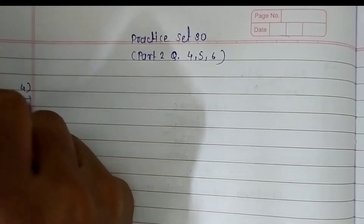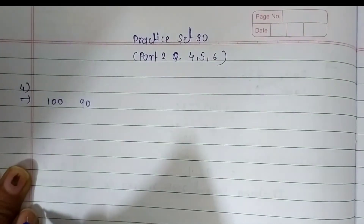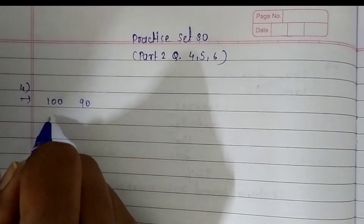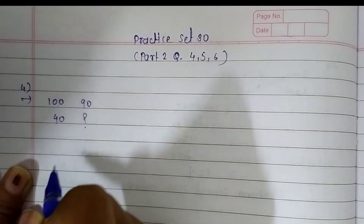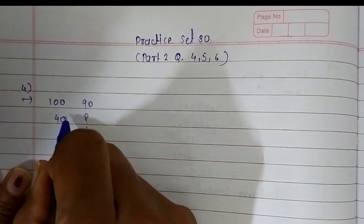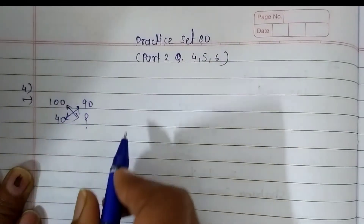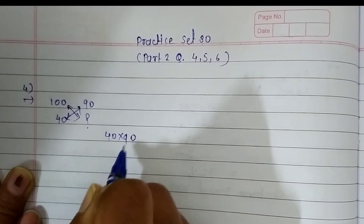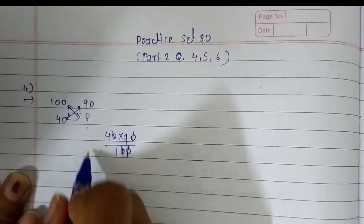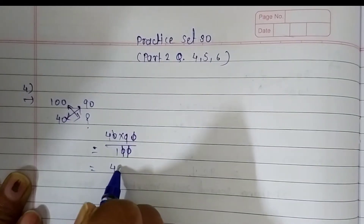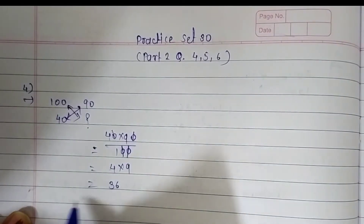For question 4, the given information is: out of 100, he received 90 greetings, and out of 40 messages we have to find the actual number. So we take cross multiplication: 40 multiplied by 90 divided by 100. Cancelling the zeros, on the numerator side we have 4 into 9. Nine fours are 36. So 36 messages were birthday greetings.